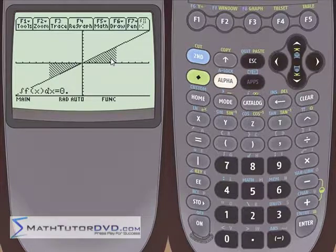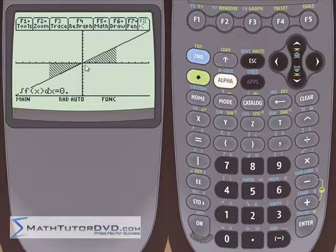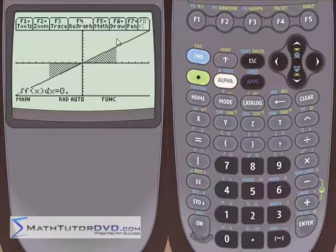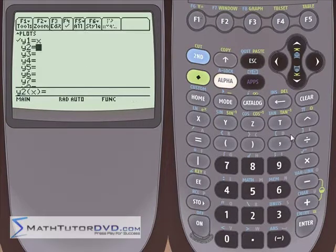And that works for any function. So if you have a function that crosses the x-axis a bunch of times and you do an integration, some of the areas below, some of the areas above, the total integration is 0. Let me show you one more thing before we leave.